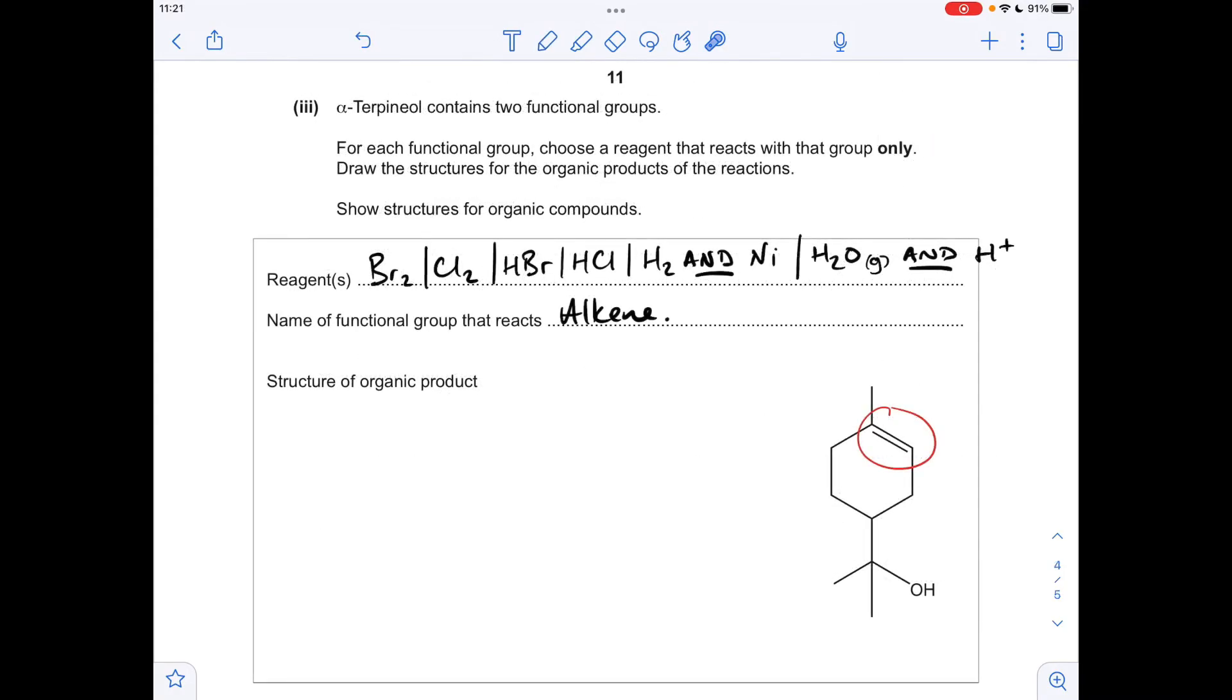For the final part of the question, I'm going to look at the alkene functional group first. So this can react with bromine, chlorine, or halogens in other words, hydrogen halides, hydrogen and a nickel catalyst. So if you've gone for the hydrogenation of the double bond, you've got to specify the catalyst. You can also react it with steam, but again, you've got to mention the catalyst. So I'm just going to run through what the product would look like of all of those reactions.